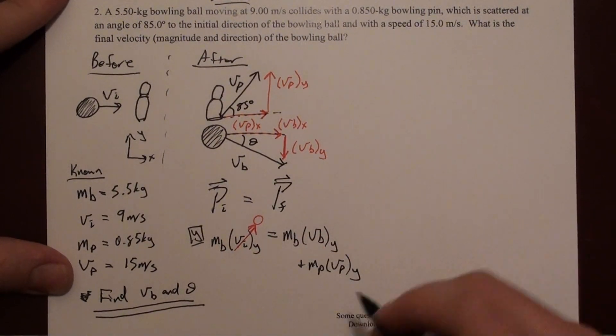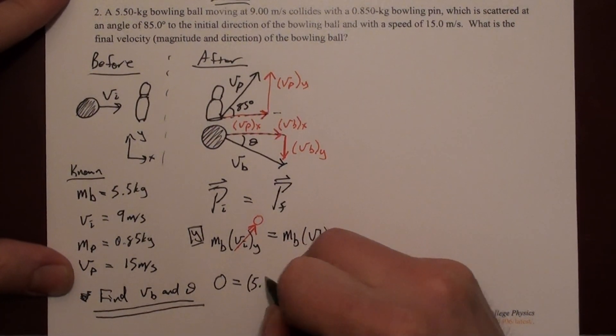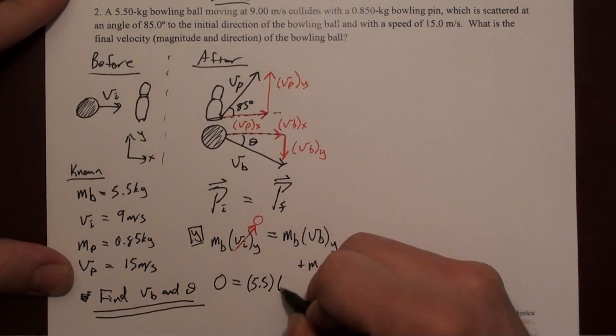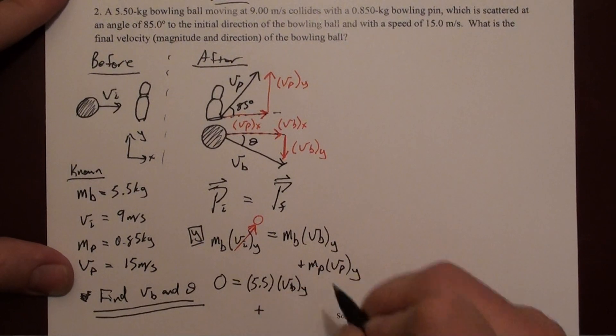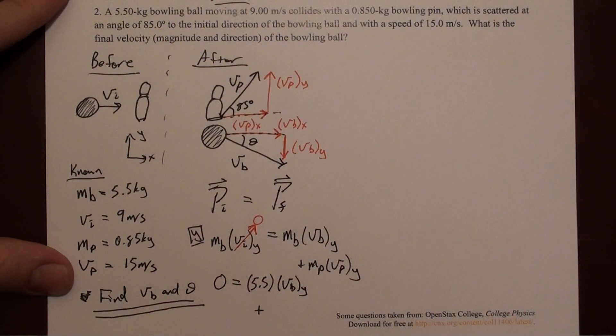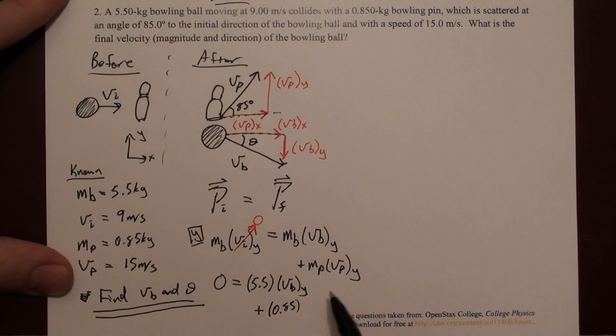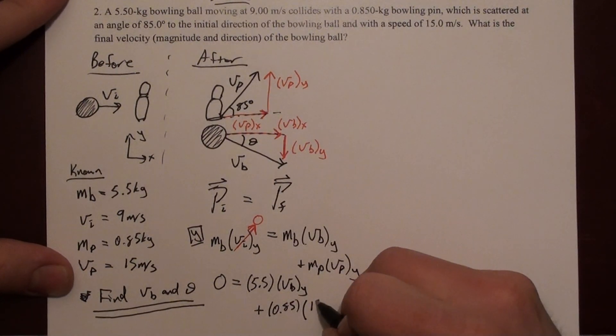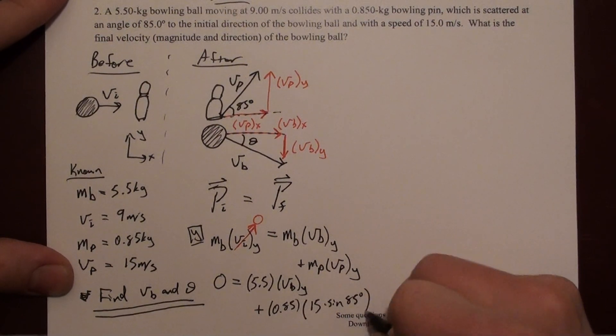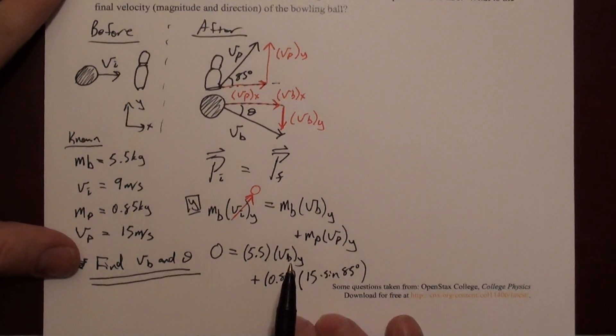I could plug in some numbers here. What I should get is zero equals 5.5 kilograms times vb y. That's related to what I'm looking for. Plus the mass of the pin, which is 0.85 times its y direction velocity. The y direction velocity for this is 15 meters per second times sine of 85, so 15 times sine of 85.